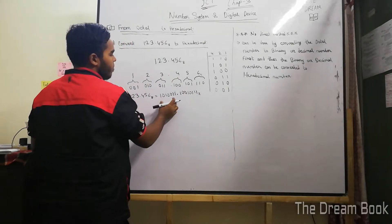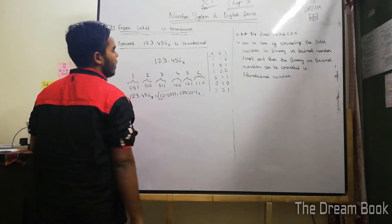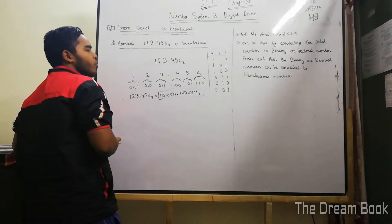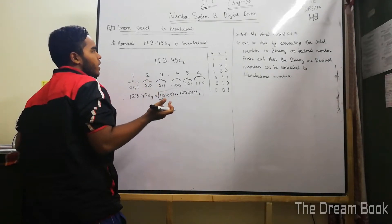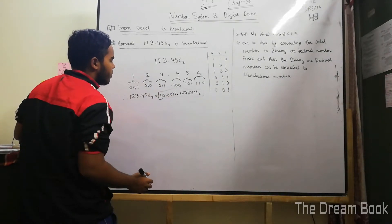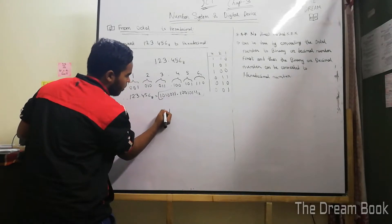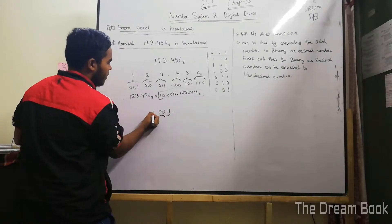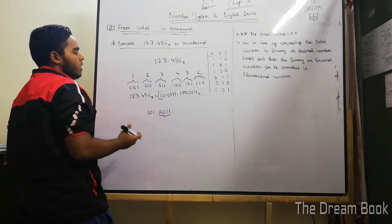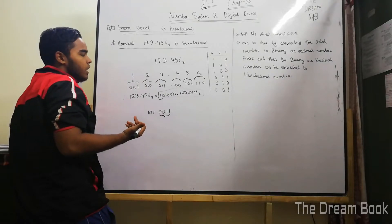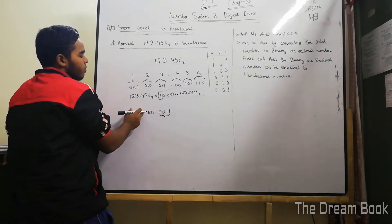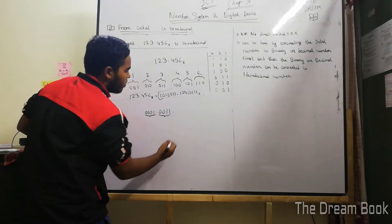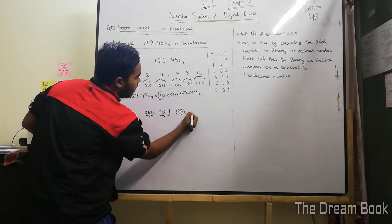So we have to convert this binary so that we can convert to hexadecimal. What do we do with this binary? We have to write the value in 4 bits and 4 bits. We will create a segment in 4 bits. We will see that the pointer is 1, 0, 0, 1 — this is one 4-bit segment. Then 0, 3, 1.